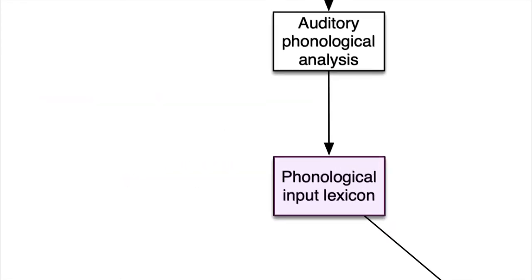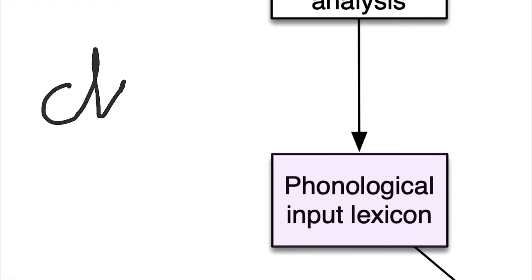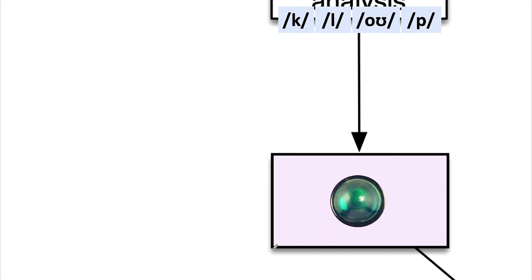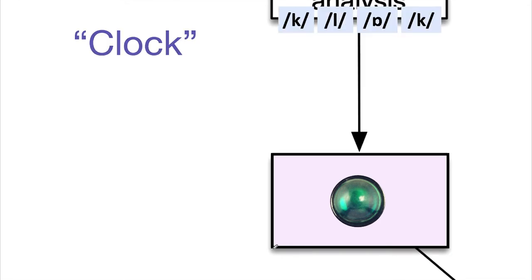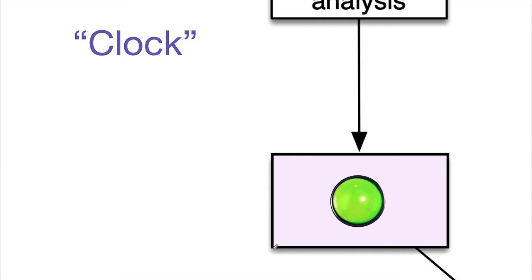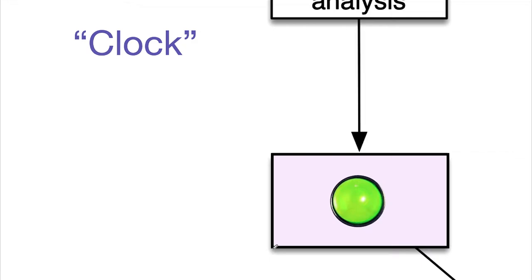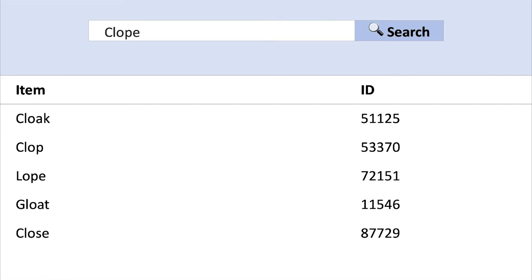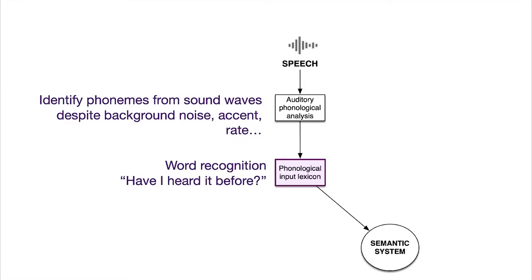If you take a word you haven't heard before — like 'clope' — when you pass those phonemes in from your auditory phonological analysis, that process will not light anything up because it doesn't know that word. Whereas a known word like 'clock' — as soon as it hears those phonemes in that sequence, it says yes, this is a known word. You can think of this like a library catalogue: it tells you if a book is there or not, but you can't access the information inside. If there is a known word and the meaning is understood, it connects to the semantic system where all meanings are stored.